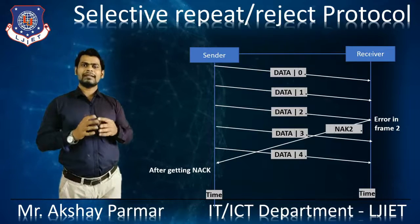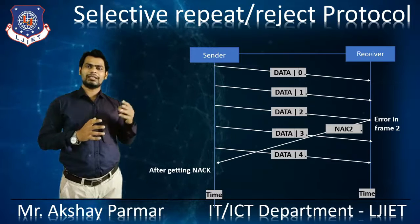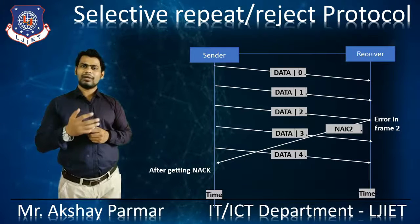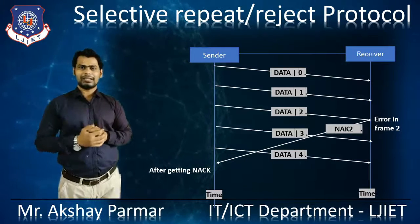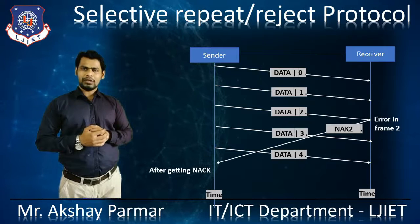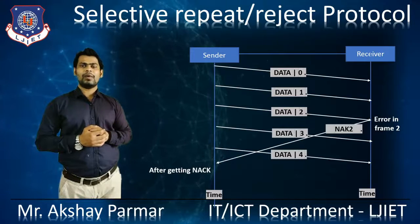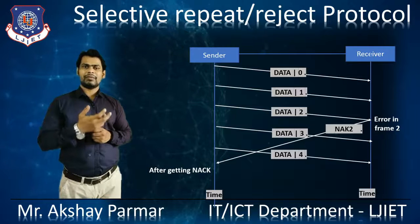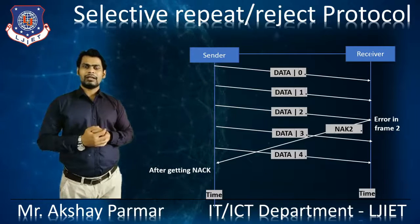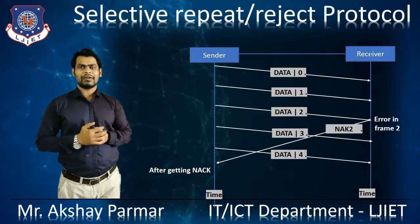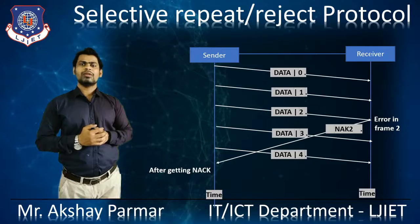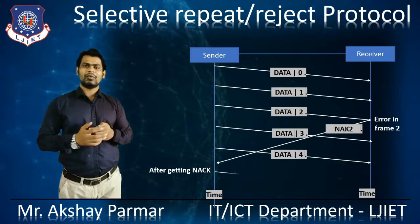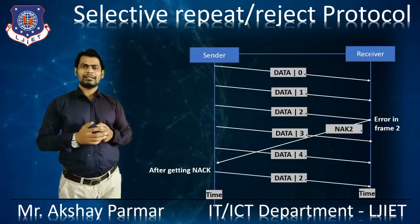After getting negative acknowledgement 2 from the receiver end, the sender knows that data frame 0 and data frame 1 are received successfully with no errors, but there is an error in data frame 2. The receiver is seeking data frame 2, so the sender retransmits data frame 2 again.